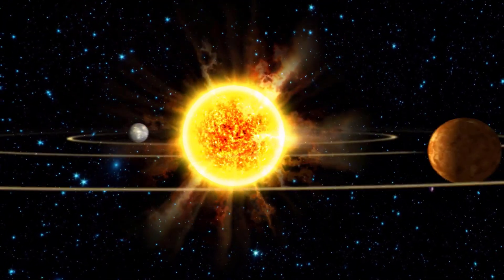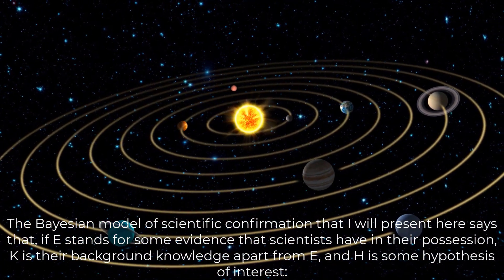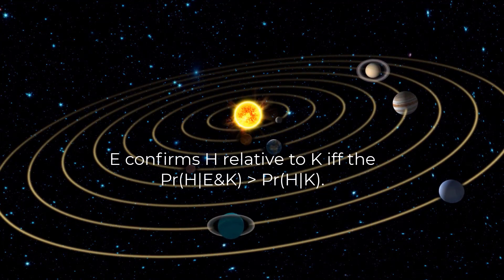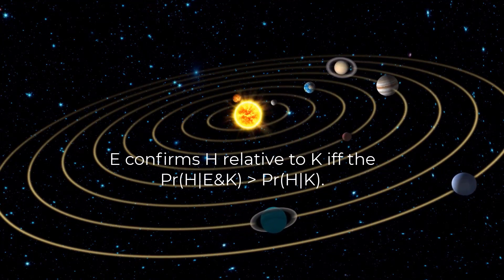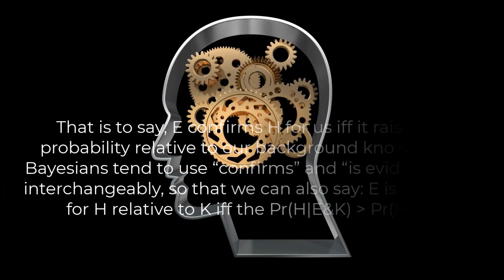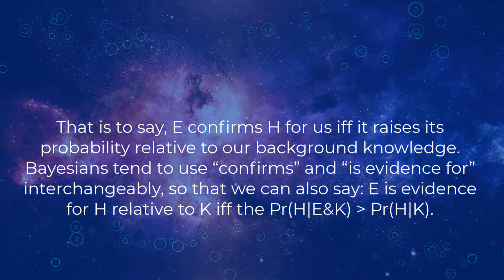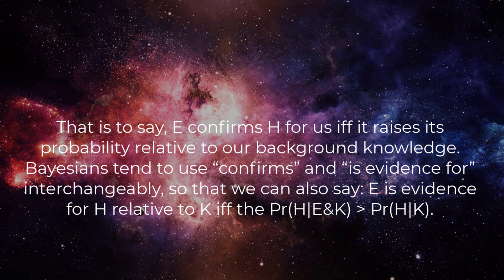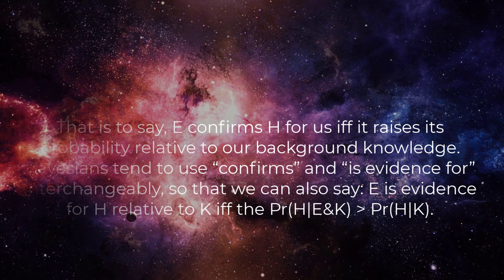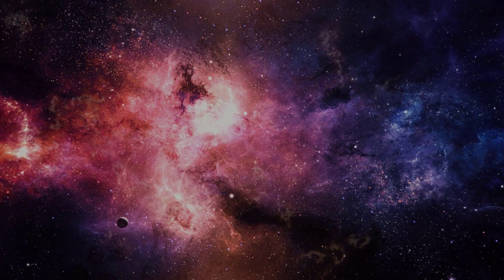Bayesian accounts of scientific confirmation arguably retain the best of both these theories while avoiding their problems. The Bayesian model says that if E stands for some evidence that scientists have in their possession, K is their background knowledge apart from E, and H is some hypothesis of interest, then E confirms H relative to K if the probability of H conditional on E and K is greater than the probability of H conditional on K alone. That is, E confirms H for us if it raises H's probability relative to our background knowledge. Bayesians tend to use 'confirms' and 'is evidence for' interchangeably, so E is evidence for H relative to K if P(H|E,K) > P(H|K). One important implication is that confirmation is always relative to background knowledge.